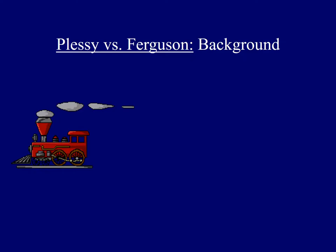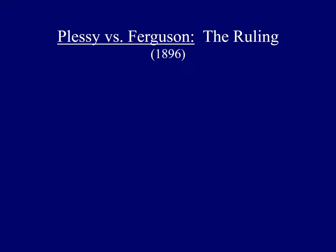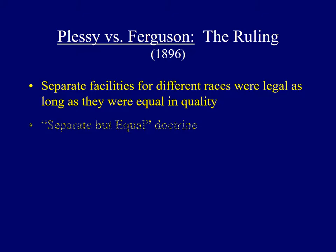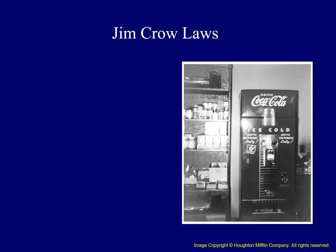The court case Plessy v. Ferguson was one of the most important and controversial rulings ever handed down by the Supreme Court. It involved a law in the state of Louisiana that required that all railroad cars be segregated on the basis of race. A man by the name of Homer Plessy sued, claiming this was unequal treatment under the law. Eventually, the Supreme Court issued a ruling in 1896. By an 8 to 1 margin, the Court ruled that separate facilities for people of different races were legal, as long as they were equal in quality — giving us the so-called separate but equal doctrine.